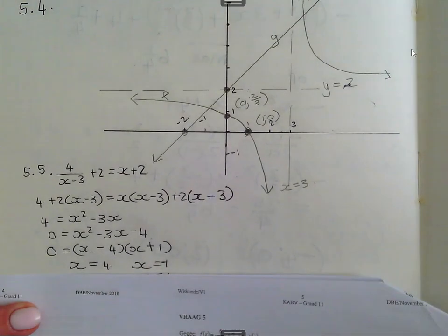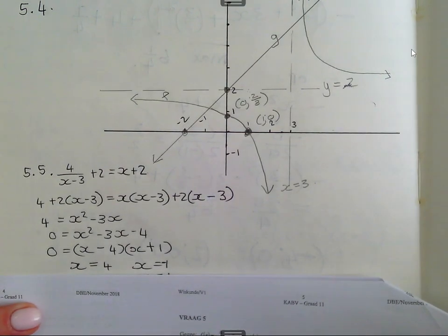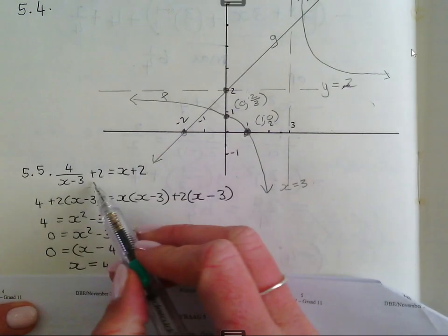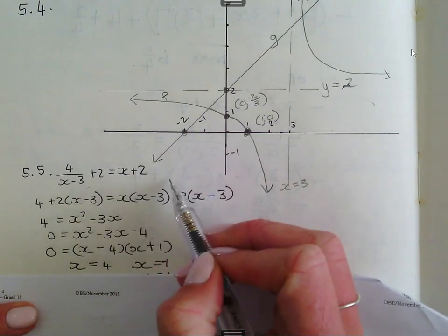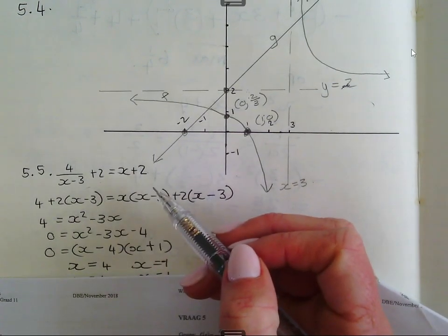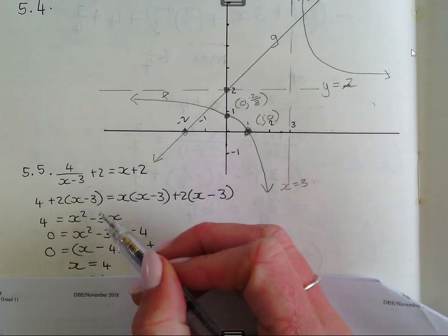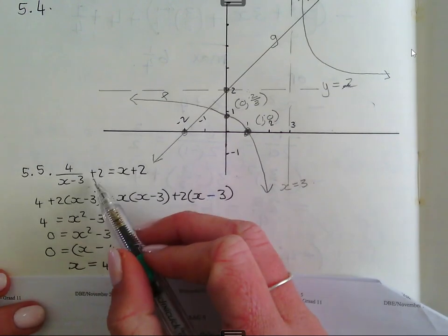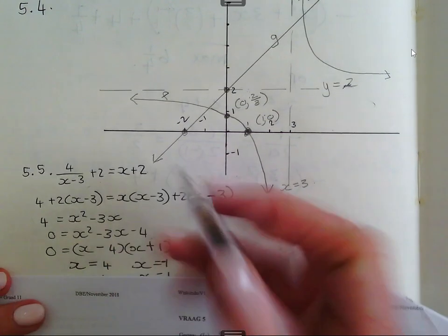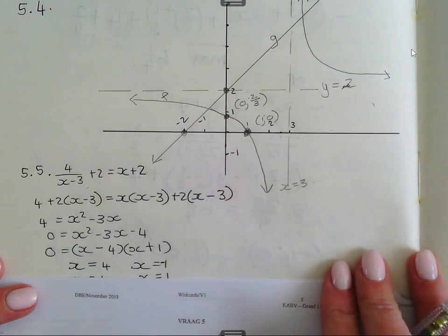Ek wil net gaan vir julle vinnig ietsie weis. Ek weet nie of julle dit genoute sê nie, maar soos hierdie 2, plus 2 wat aan die kant is, en die plus 2 wat aan die kant is, kan sê die hermekor uit. So as jy, voordat jy een maal met die noemer, die 2 is so oorvat, is die 2 minus 2 aan sy weg.